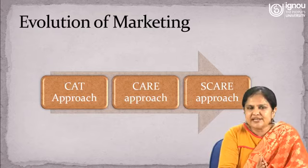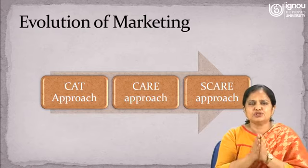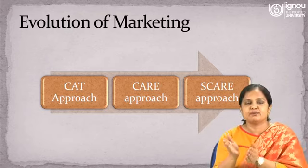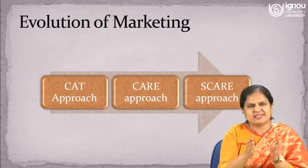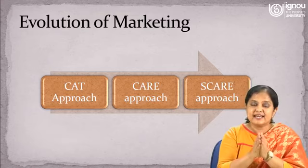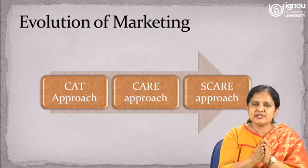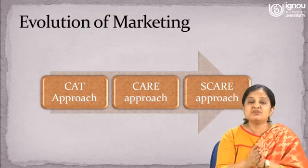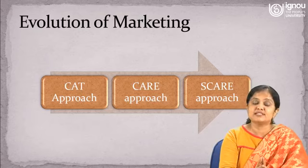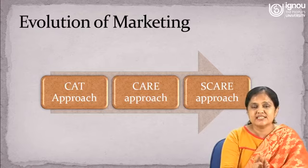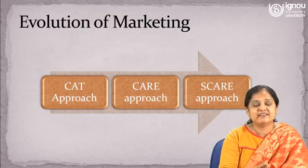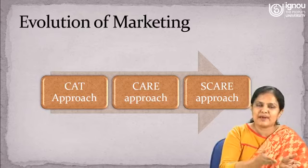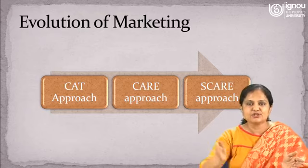Whenever I try to explain evolution of marketing, I try to show it through a paradigm shift from the CAT approach to the CARE approach to the SCARE approach. CAT stands for 'Consumers Are Thing' — consumers are something and they need to be catered to. CARE is C-A-R-E: C for Consumers, A, R for Really, and E for Everything. At the end of the discussion you will understand how this whole paradigm shift has taken place from CAT to CARE to SCARE.